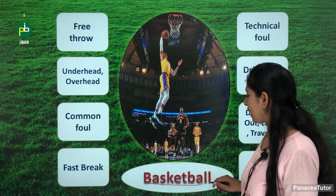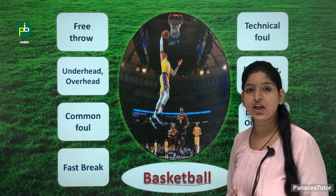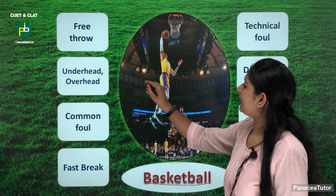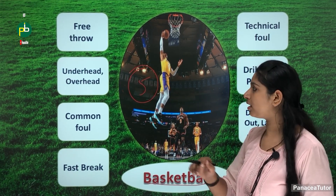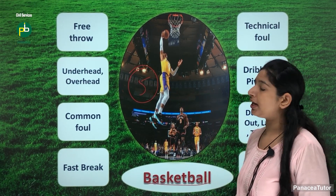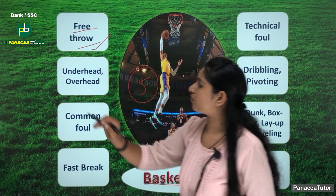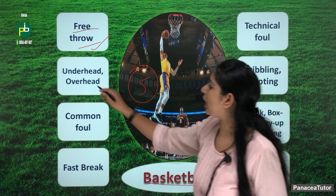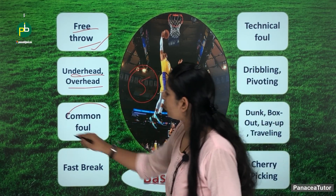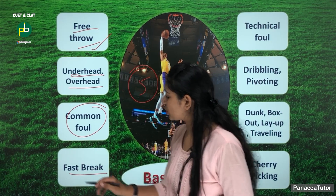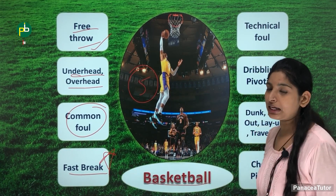The next sport is basketball. How many players are in a single team? In one team, the total number of players is 5. There are 5 players in one single team. Related important terms: free throw — the way to serve the ball. Overhead and underhead. Common foul. Next is fast break — an important term related to basketball.